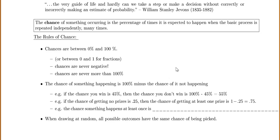For example, if the chance that you win is 45%, then the chance that you don't win is 100% minus 45%, which is 55%. Or if the chance of getting no prizes is 0.25, then the chance of getting at least one prize is 1 minus 0.25, which is 0.75.